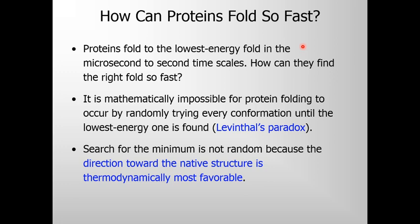Protein folding is very fast, but how can proteins fold so fast? Proteins fold to the lowest energy fold in the microsecond to second time scales. But the question is how can they find the right fold so fast? It is mathematically impossible for protein folding to occur by randomly trying every conformation until the lowest energy one is found. That is Levinthal's paradox.